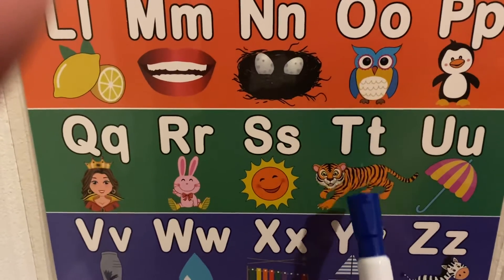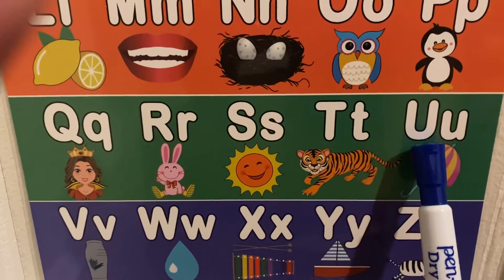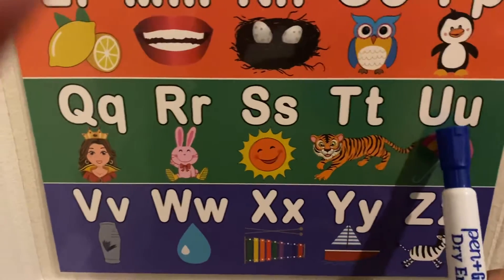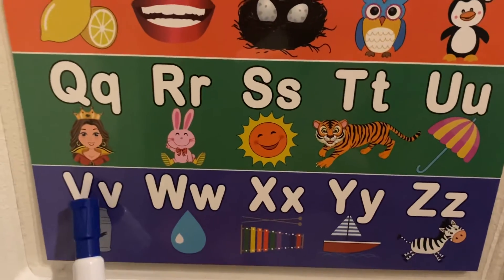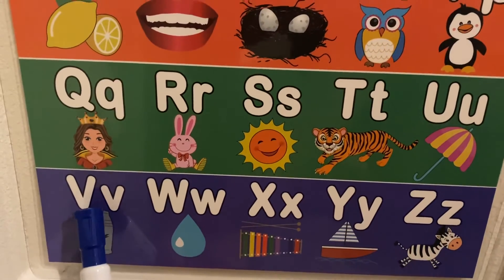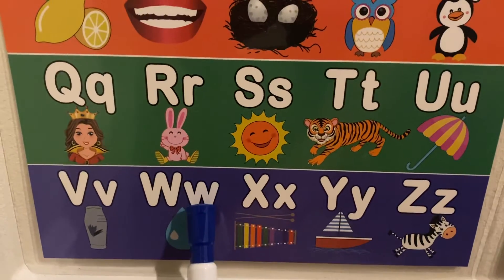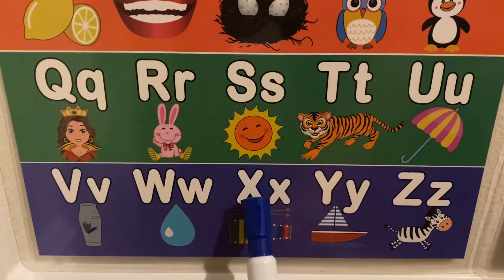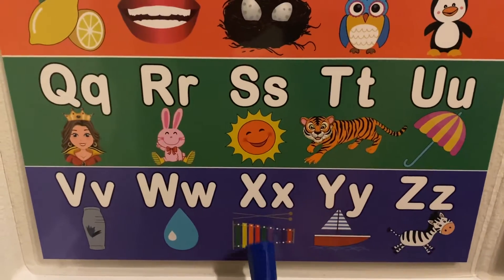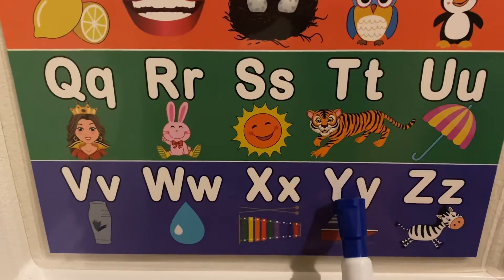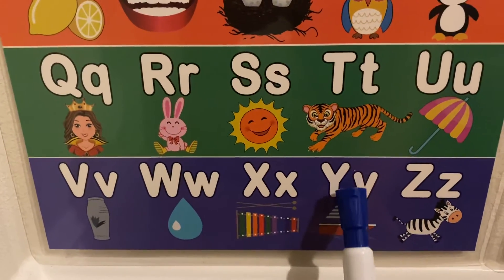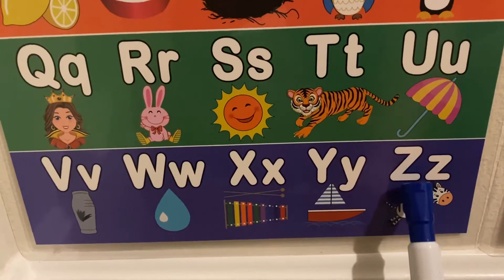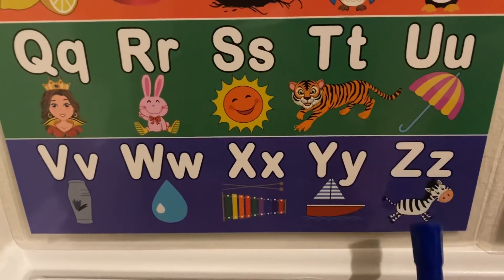T sound is like for tiger. U has two sounds, like for umbrella and U. V sound is like for vase. W sound is like for water. X sound is like for xylophone. Y sound is like for yacht. And Z makes the sound like for zebra.